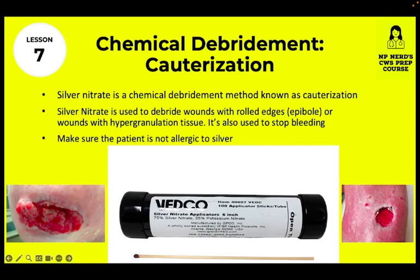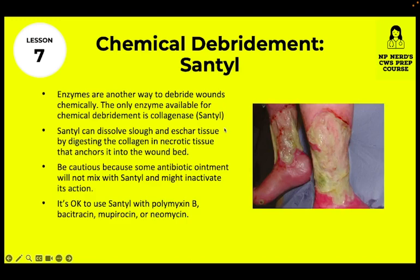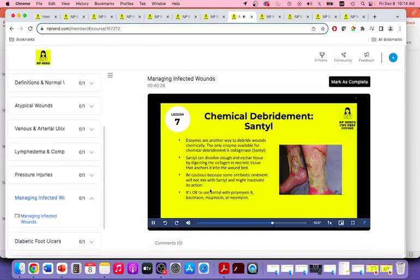Silver nitrate can also get rid of hypergranulating tissue — the hypergranulation is literally sticking out of the wound, and when you use silver nitrate on it, it burns it out. Silver nitrate is also used to stop bleeding. Make sure your patient is not allergic to silver. Santol is another chemical debridement — it's an enzyme.